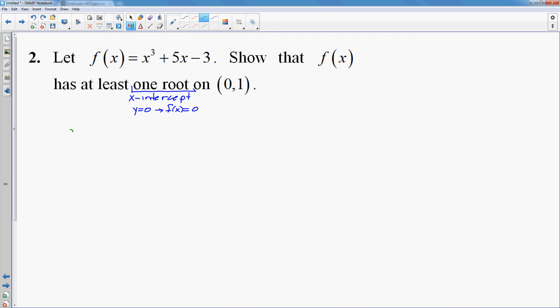So I will start off by finding f of 0. f of 0 is going to be nice. 0 cubed plus 5 times 0 minus 3 is negative 3. f of 1 is going to be 1 cubed plus 5 times 1 minus 3. That's 6 minus 3 is 3. So I travel from negative 3 to positive 3, therefore there must be a root on the interval 0 to 1.